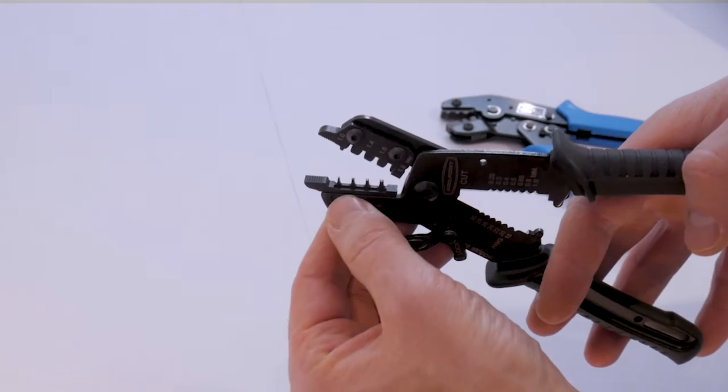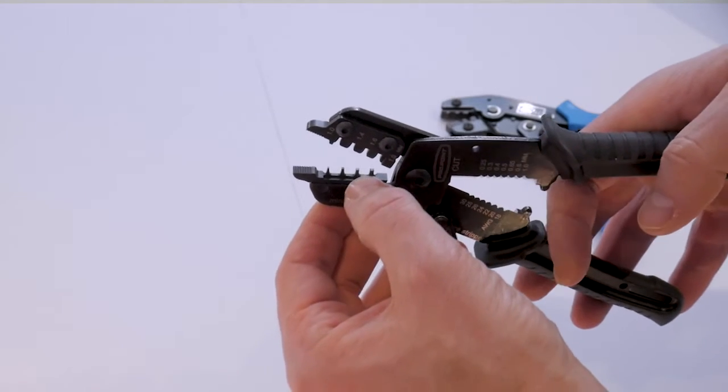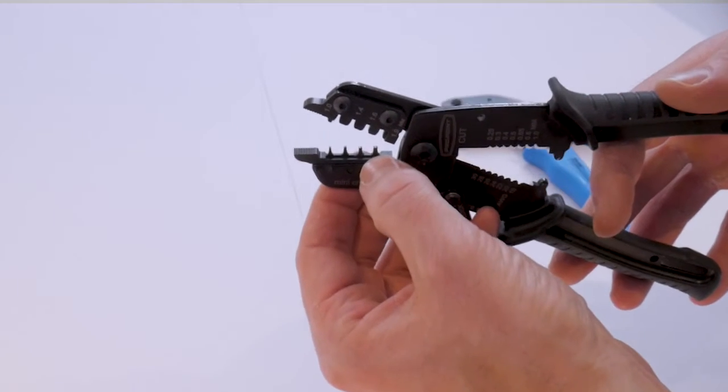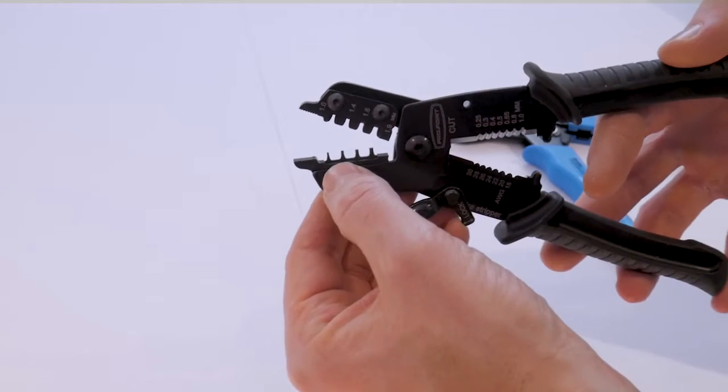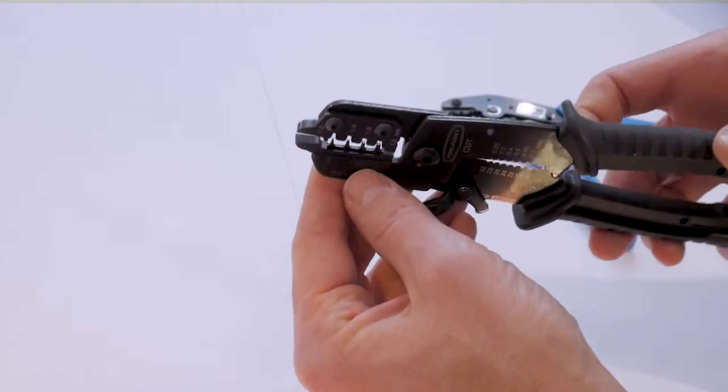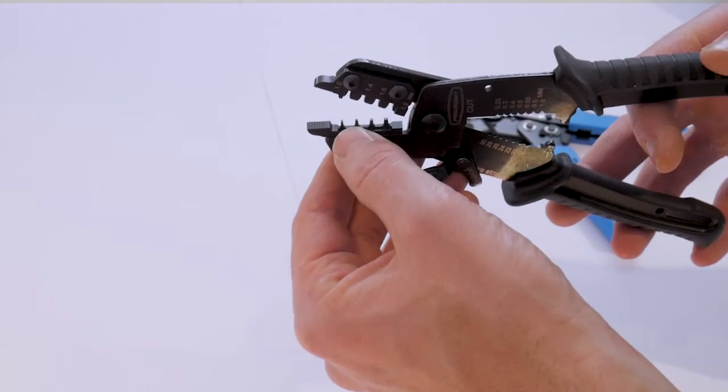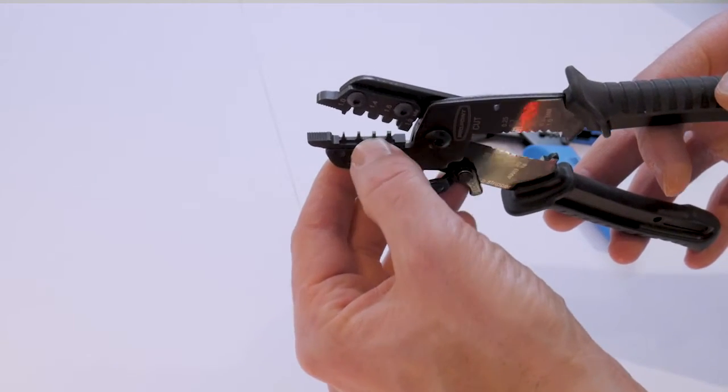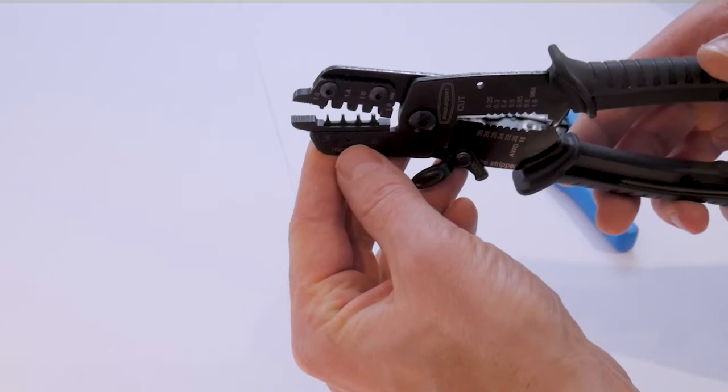This style here will only do one section at a time. So you actually have to crimp twice for one terminal, and so you'll be crimping your section of the terminal that clamps down on the wire insulator first, and then you can go ahead and move on to the second part of the terminal that clamps down onto the bare wire, and you do that second.